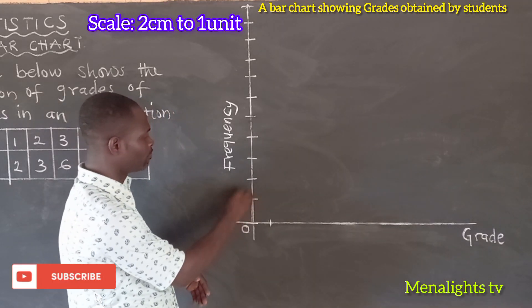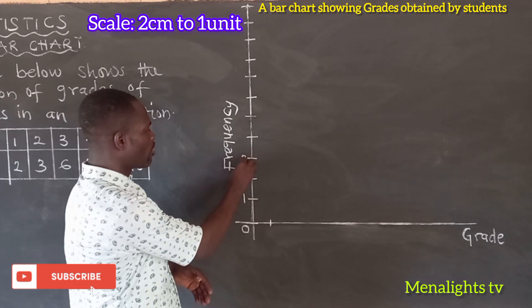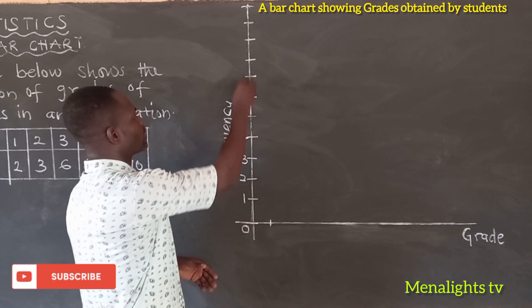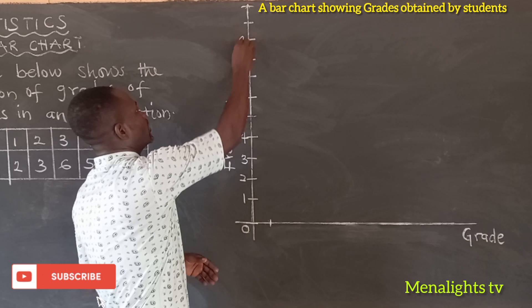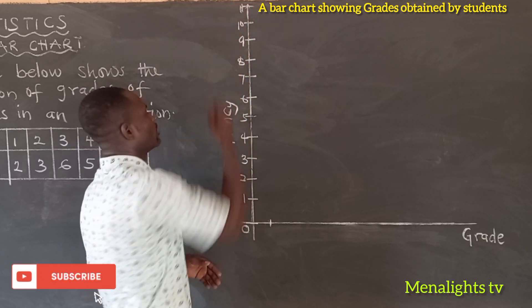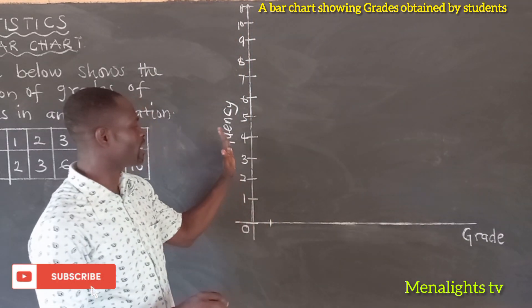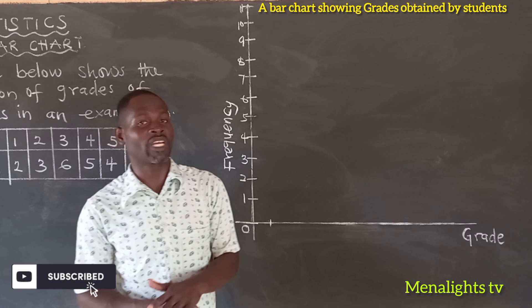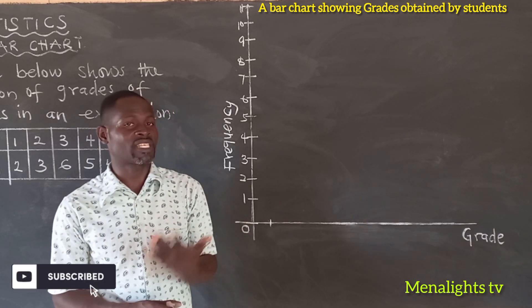So this would be 1, 2, 3, 4, 5, 6, 7, 8, 9, 10, and 11. The frequency here is the same as the number of students that are obtaining the grade.